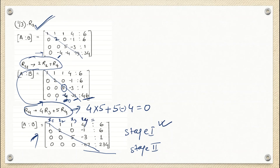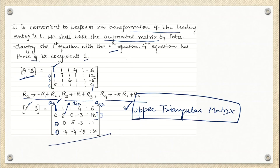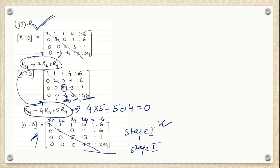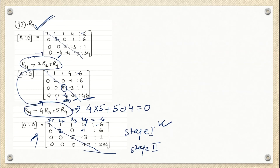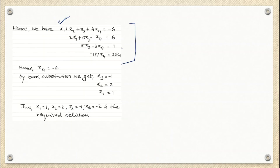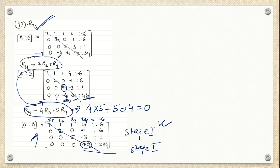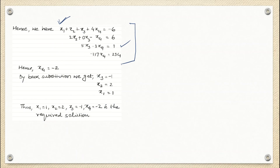The first equation is 1·X1 + 1·X2 + 1·X3 + 4·X4 = minus 6. The second equation is 2·X2 − X4 = 6. The third equation is 5·X3 − 3·X4 = 1. The fourth equation gives minus 1, 1, 7·X4 = 234, meaning X4 = minus 2.